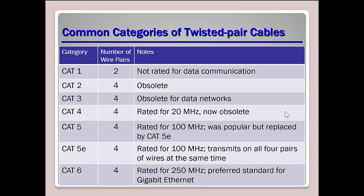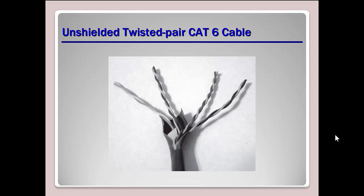Looking at the categories: Cat1 is not rated for data, and a lot of older Cat cables are obsolete. Cat5 has pretty much been replaced with Cat5e. Cat6 is rated at around 250 megahertz — the preferred standard for gigabit Ethernet. With Cat5e running gigabit, we actually lose some transmission rate and are reaching its limit.